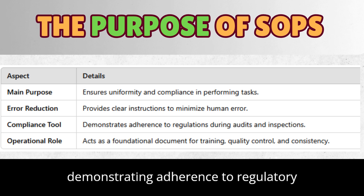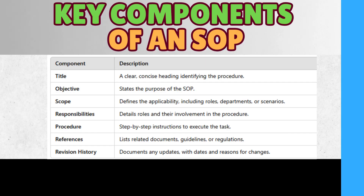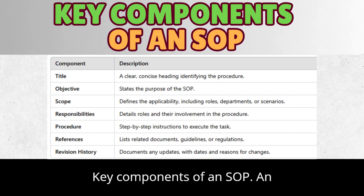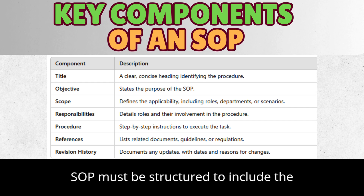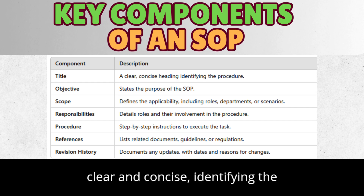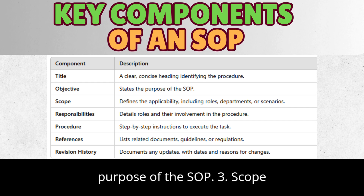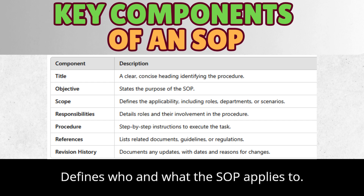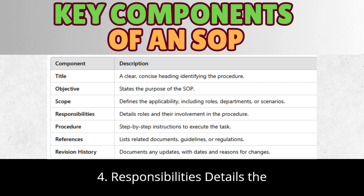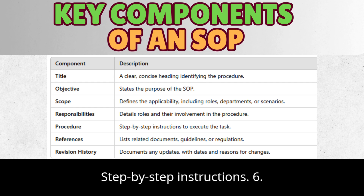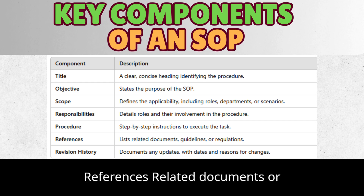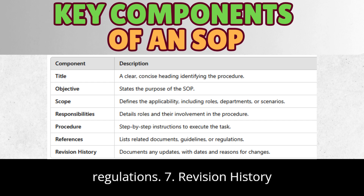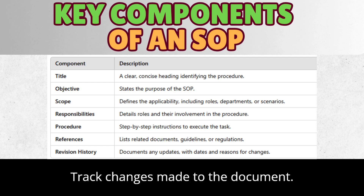Key Components of an SOP: An SOP must be structured to include the following: 1. Title — clear and concise, identifying the procedure. 2. Objective — the purpose of the SOP. 3. Scope — defines who and what the SOP applies to. 4. Responsibilities — details the roles involved. 5. Procedure — step-by-step instructions. 6. References — related documents or regulations. 7. Revision History — track changes made to the document.